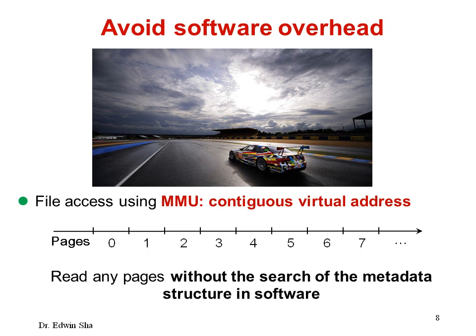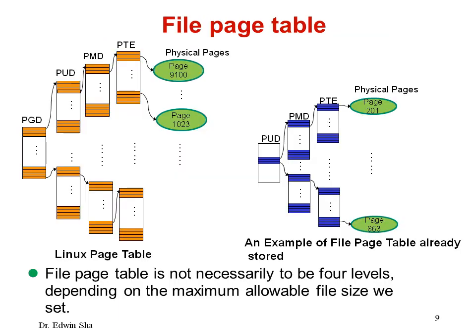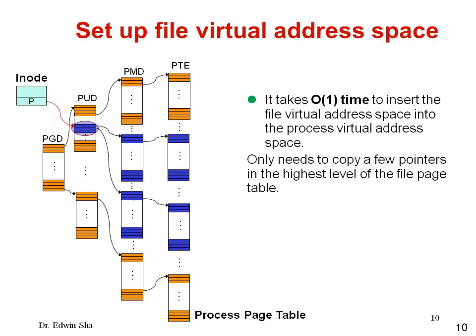We want to use MMU to access files, so we can read any pages without the search of the metadata structure in software. File virtual address space is represented by a file page table, which is exactly the same structure as the process page table. When we open a file, we insert this file virtual address into the process virtual address space.